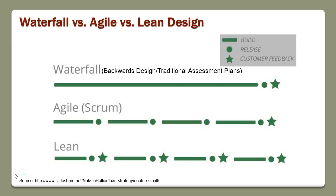Let me talk a little more about what each design methodology looks like. Waterfall is a backwards design traditional assessment plan — you might have a three-to-five year cycle, or for bigger projects a ten-year cycle, where you develop a plan, build it, release it, and then get customer feedback. That makes sense where capital costs are really high and speed to market isn't that important, so a lot of manufacturing uses the waterfall method. Agile, in the software world, is also called Scrum — you build and then release, maybe weekly or every other week.